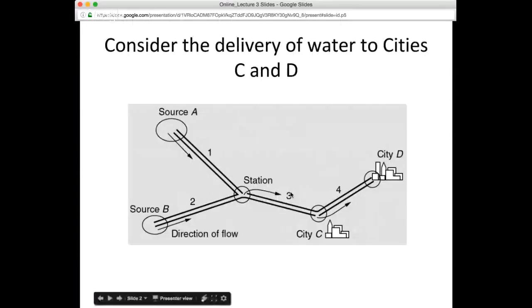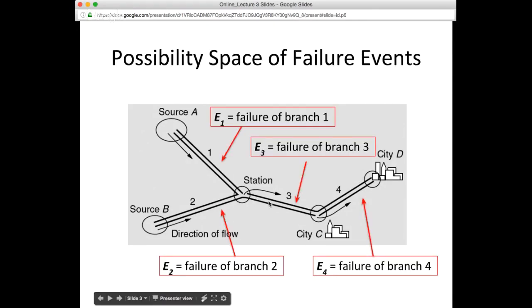Remember in class we talked about this problem where we have two sources of water — maybe two reservoirs, source A and source B — connected by pipelines to a pump station, which then pumps the water to city C. From there, whatever's left gets pumped to city D. We were interested in understanding the conditions under which either city C or city D gets a loss of water supply based on certain events, like the failure of one of these pipelines: failure of branch 1 would be E1, failure of branch 2 would be E2, and so on.